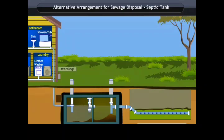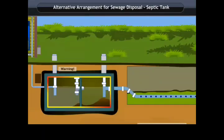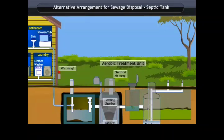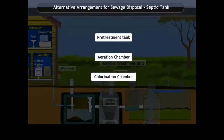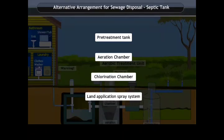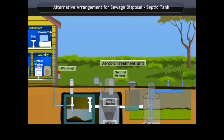Septic tanks are used to settle out solids and partially treat wastewater before it reaches the distribution system. They should be made of reinforced concrete, polythene or prefabricated fiberglass. Many septic tanks used now are two-compartment tanks. An aerobic system can remove between 85 to 98% of organic waste. Aerobic units treat wastewater to a quality high enough for effluent to be used in a ground-level spray system. An aerobic system is typically made up of four components: a pre-treatment tank, an aeration chamber, a chlorination chamber and a land application spray system. The excreta collected in these toilets can also be used for generating biogas.